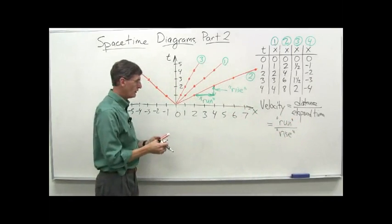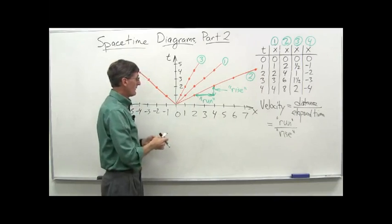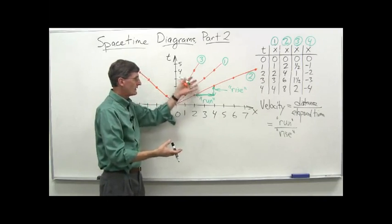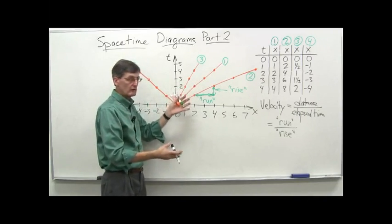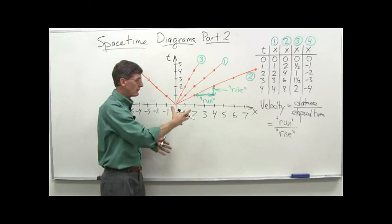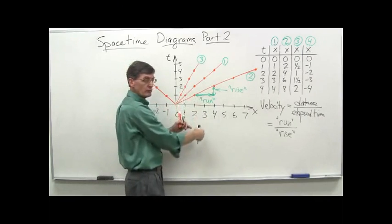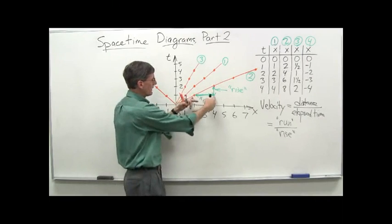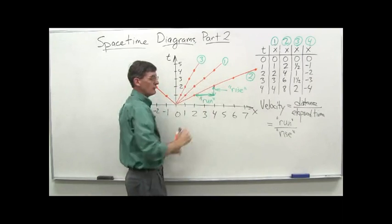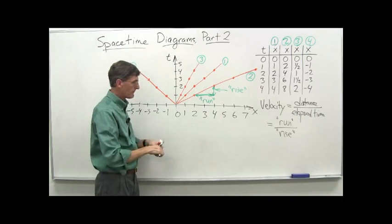If I didn't have these numbers and I wanted to calculate the velocity of any given world line, I'd just pick two points and calculate: how far has it gone — the run — and how long did it take — the rise. That gives me the velocity.